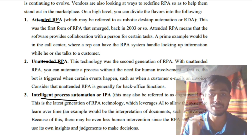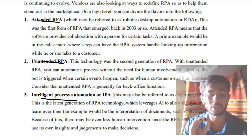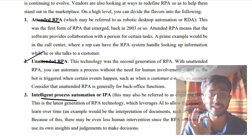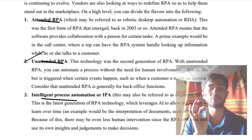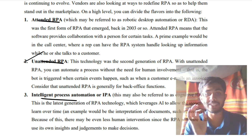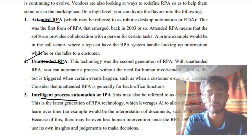Unattended means the robotic process automation will be doing everything on its own — this generally happens in email invoice processing, bank and finance transactions. The last type is Intelligent Process Automation, which incorporates AI. Using these three key concepts you can fill the pages for this answer.